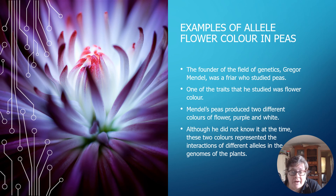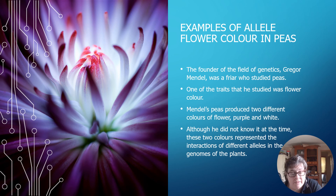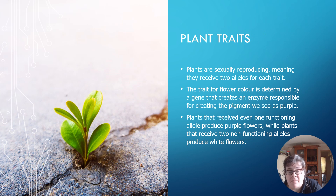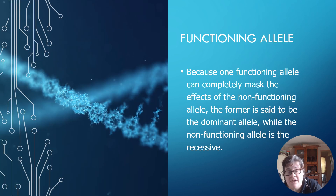An example of alleles is flower color in peas. The founder of genetics, Gregor Mendel, was a friar who studied peas. One trait he studied was flower color. Mendel's peas produced two different flower colors: purple and white. Although he didn't know it at the time, those two colors represented the interactions of different alleles in the genomes of the plant. Plants are sexually reproducing, meaning they get two alleles for each trait. The trait for flower color is determined by a gene that creates an enzyme responsible for producing the purple pigment. Plants that receive at least one functioning allele produce purple flowers, while plants that receive two non-functioning alleles produce white flowers. One functional allele can completely mask the effects of a non-functioning allele — the former is said to be the dominant allele, while the non-functioning allele is recessive.